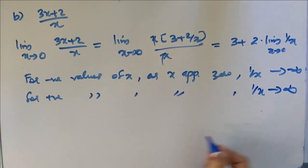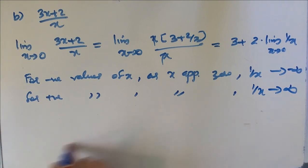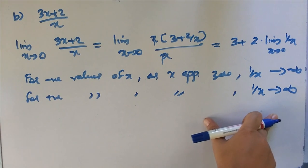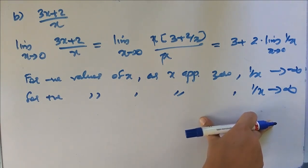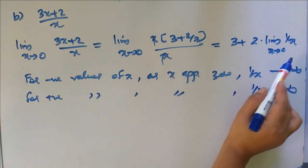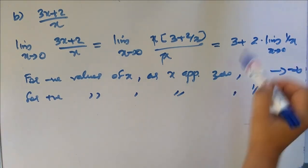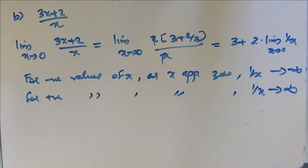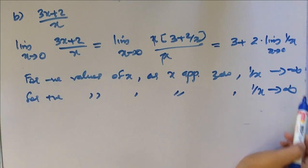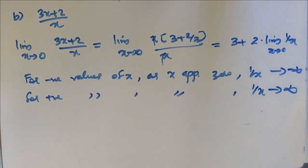From the right side, 1 by x tends to plus infinity. So left side gives minus infinity and right side gives plus infinity. Therefore, limit x tends to 0 of 1 by x does not exist, and so the required limit does not exist.